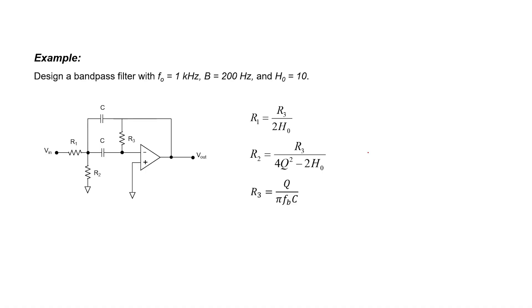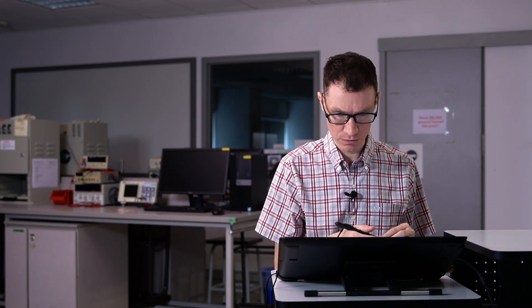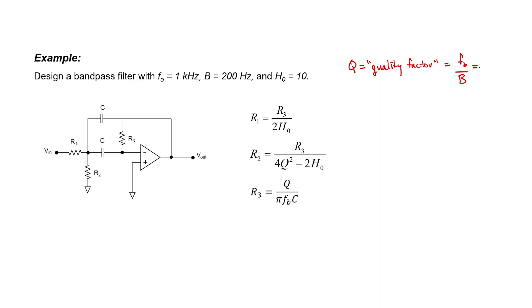Now let's move on to the example problem. Let's design a bandpass filter that has the center of its passband at 1 kHz, a passband that is 200 Hz wide, and a DC gain of 10. In these circuits, Q stands for quality factor — we've seen this before with passive filters. The quality factor is F sub B divided by B, that is the center frequency divided by the passband width. So the sharper the filter's response, the higher the value of Q. In this particular example, 1 kHz divided by 200 Hz gives Q = 5.